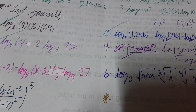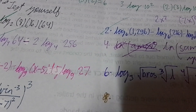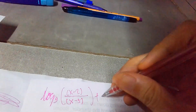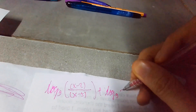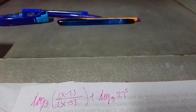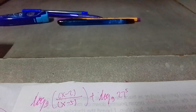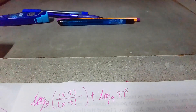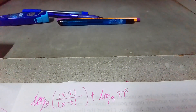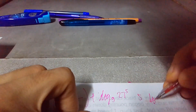We can set aside the 5 and work on log base 9 of 27 separately to avoid confusion. Whatever answer we get from log base 9 of 27, we multiply by 5 at the last step.